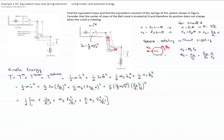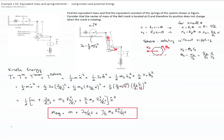What is inside the bracket is our equivalent mass of the system. Adding the last two terms together, we obtain the equivalent mass of the system.